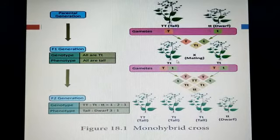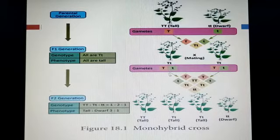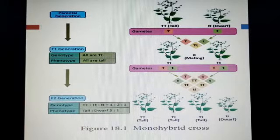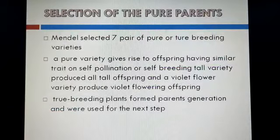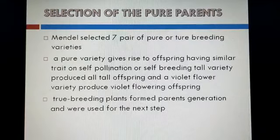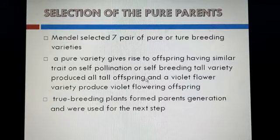The recessive characters can appear in F2 generations. In heterozygous condition, the phenotype characters appear as dominant characters. In tall and dwarf, tall is the dominant character, so it will appear as dominant in phenotype even though the genotype is heterozygous. A pure variety gives rise to offspring having similar traits upon self-pollination and self-breeding — tall variety produces all tall offspring because it is a homozygous condition.